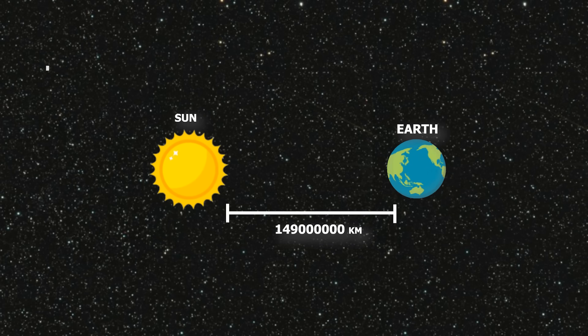Distance between Earth and Sun is around 14 crore 90 lakh km. In our Milky Way galaxy, there are a large number of stars.